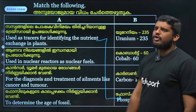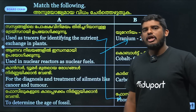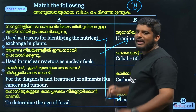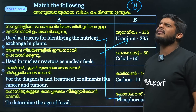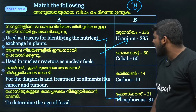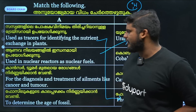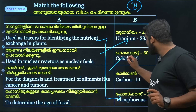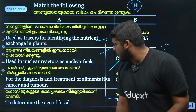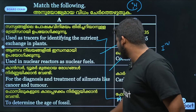Uranium-233 is used as fuel in nuclear reactors. Deuterium, or Hydrogen-1-2, is also used in nuclear reactors. Iodine-131 and Cobalt are used for the diagnosis and treatment of ailments like cancer and tumors. Carbon-14 is used in carbon dating.